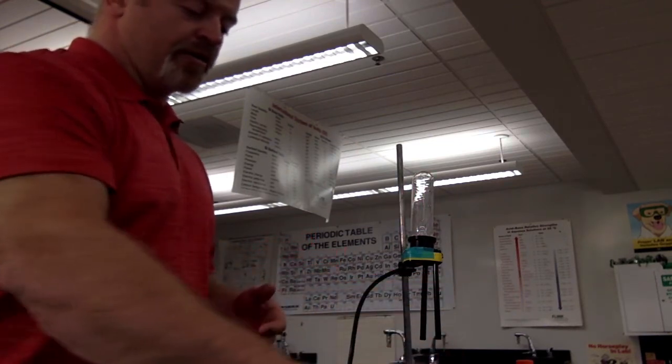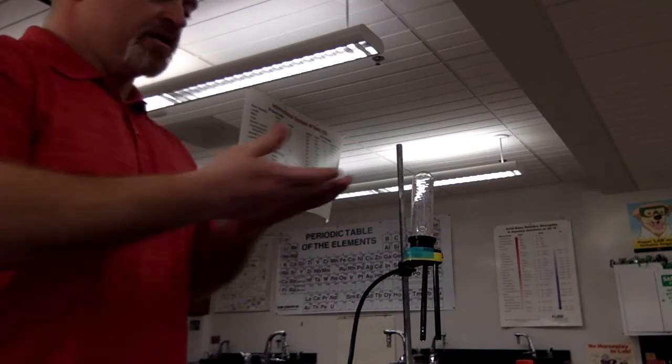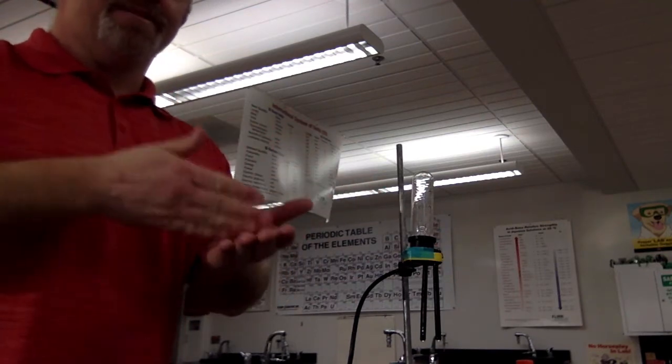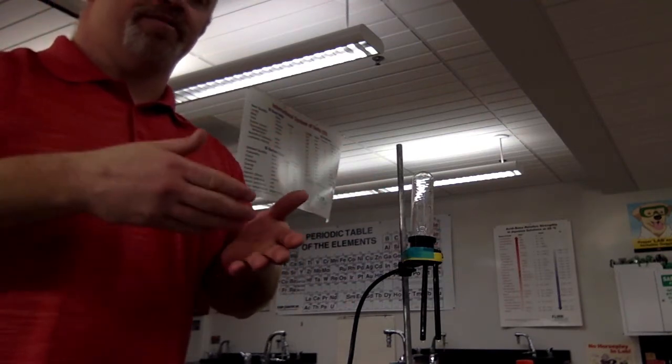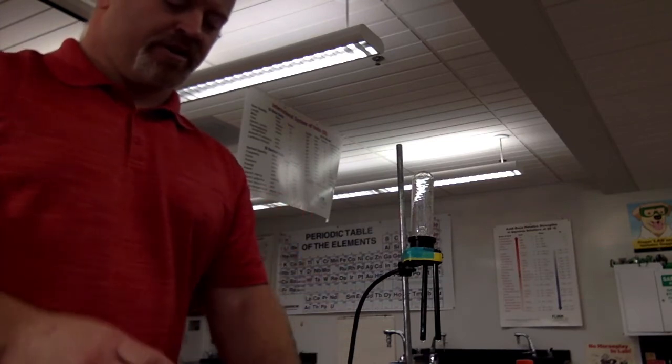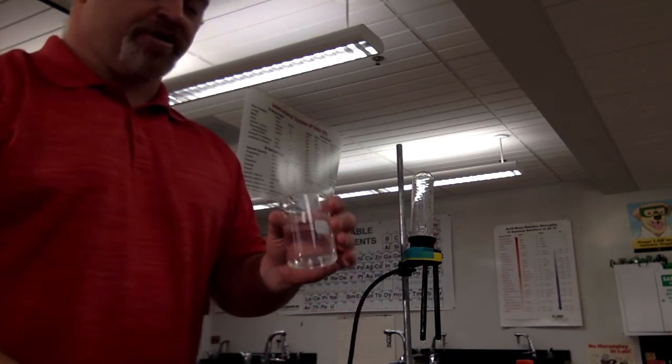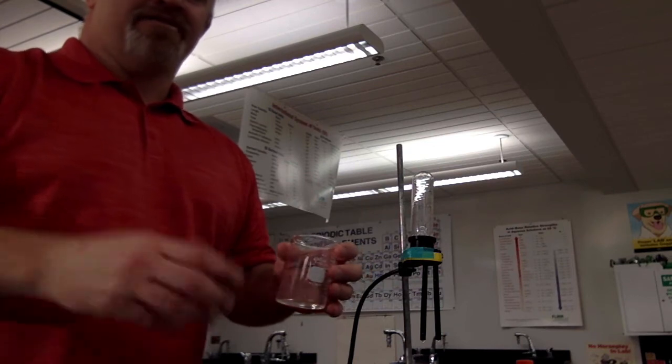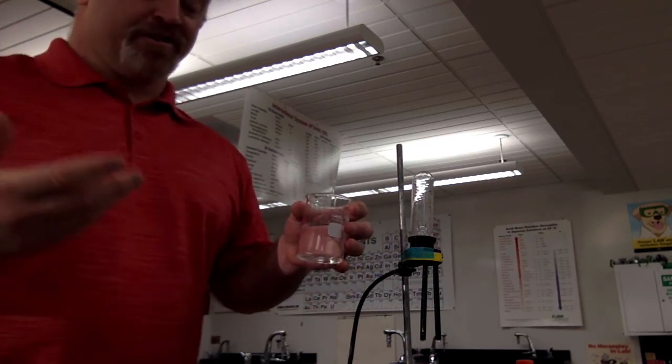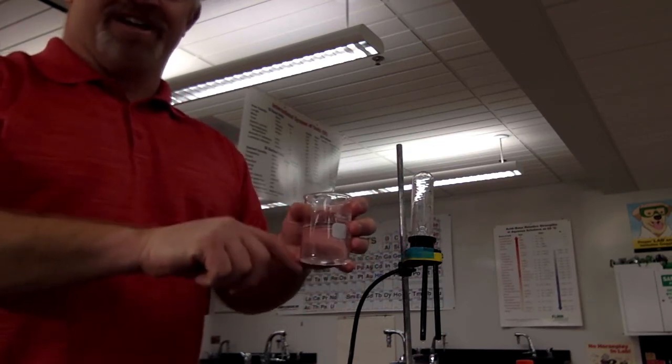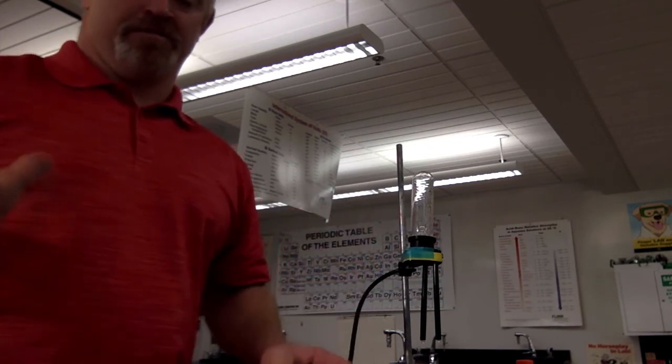Now we could keep doing that. The more and more concentrated I make this, the brighter the light bulb will go. Now the limit to that is called the solubility point or the saturation point. So at some point, I had to put so much salt in here that it won't all dissolve. After that, I can put salt in here until my face turns blue. But if it doesn't dissolve into ions, it won't conduct anymore.